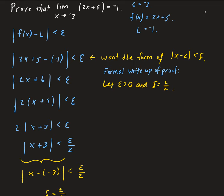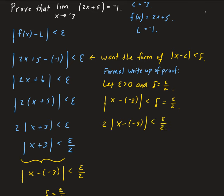So now we start with: if the absolute value of x minus c — in this case c is negative 3, so x minus negative 3 — is less than delta. We start with this delta neighborhood, and we know delta is equal to epsilon over 2. Then we work backwards and multiply both sides by 2, giving us 2 times the absolute value of x minus negative 3, less than epsilon.